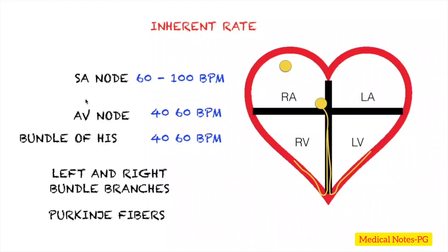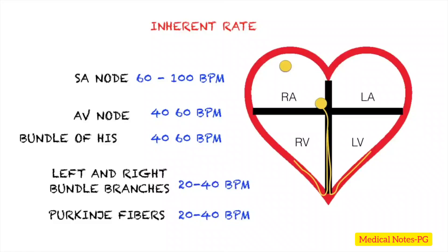The Bundle of His also generates its own impulse and can produce 40 to 60 beats per minute. If the AV node or Bundle of His both fail, the left and right bundle branches and Purkinje fibers will generate their own impulse, with the capacity to produce 20 to 40 beats per minute.